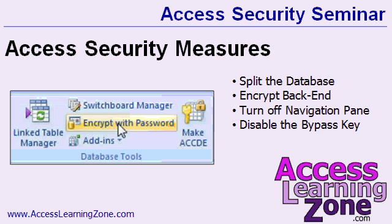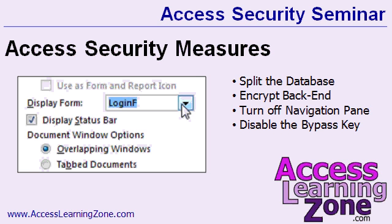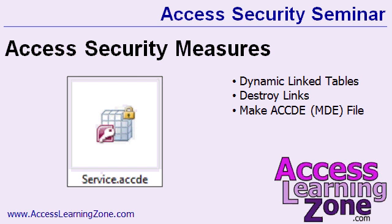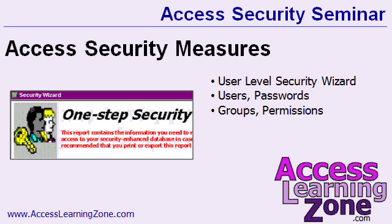Next, we'll take a look at some of Access's built-in security measures. We'll split the database into a front-end and back-end solution, then encrypt the back-end database so it requires a password to see any of your table data. We'll turn off the navigation pane and specify our own login form. We'll learn how to disable the bypass key using some VBA code. For an extra security measure, we'll learn how to dynamically link to our tables in the back-end database and destroy those links when done. We'll also make an encrypted version of your front-end database that hides all of the report, form, and module design — it's called an ACCDE file in Access 2007, or an MDE file in older versions.